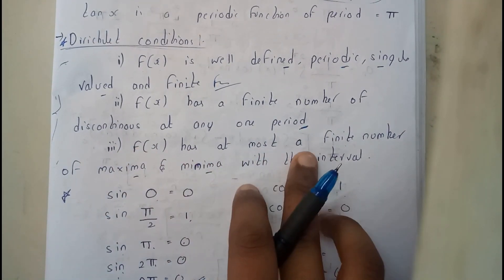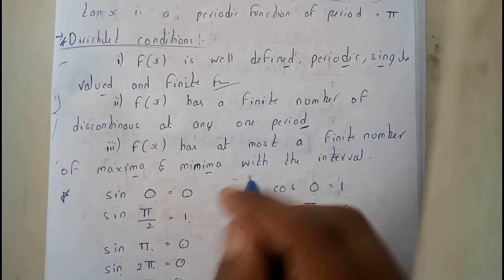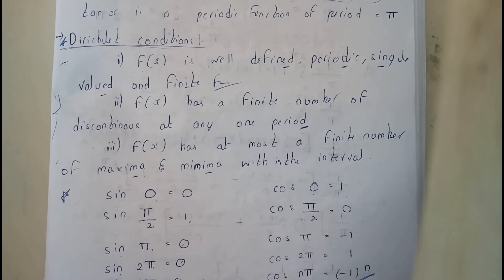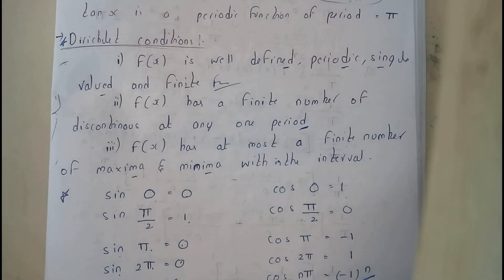And third: f(x) has at most a finite number of maxima and minima within the interval. Now I hope everyone is now clear with the Dirichlet conditions also.